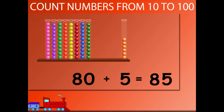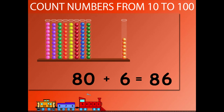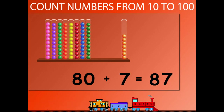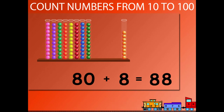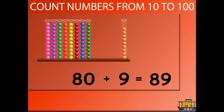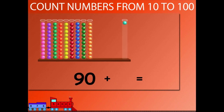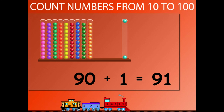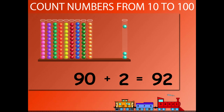80 plus 5 is equal to 85. 80 plus 6 is equal to 86. 80 plus 7 is equal to 87. 80 plus 8 is equal to 88. 80 plus 9 is equal to 89. 80 plus 10 is equal to 90. 90 plus 1 is equal to 91. 90 plus 2 is equal to 92.